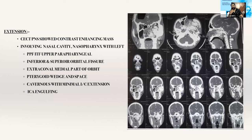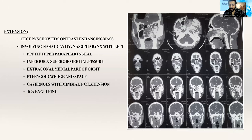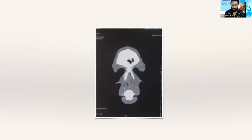Let us read this CT scan cut by cut and see what information we can get to plan the surgery. What people generally say in the report: the mass is involving the nasal cavity, nasopharynx, pterygopalatine fossa, infratemporal fossa, upper parapharyngeal space, inferior and superior orbital fissure, extraconal medial orbit, pterygoid wedge, and the cavernous sinus with anterolateral extension engulfing the internal carotid artery. That's the radiologist's report — but we have to use it to actually plan the surgery.